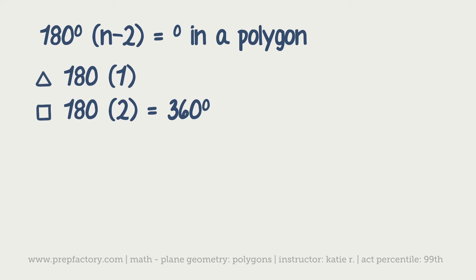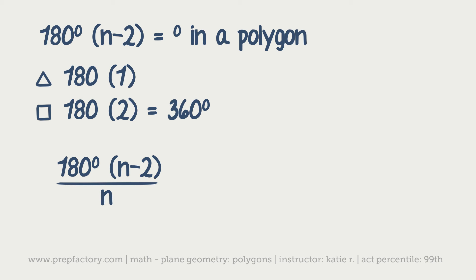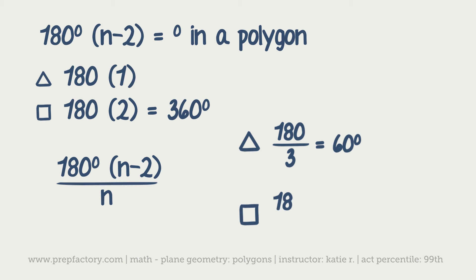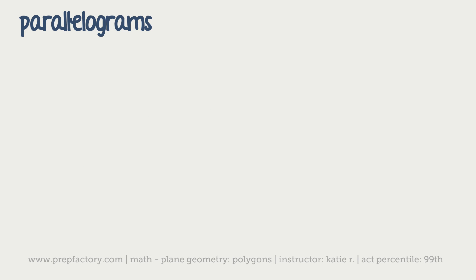If you're trying to find the number of degrees in any given angle in a regular polygon — regular meaning all angles and all sides are the same — then take the same formula and divide by n. For a triangle: 180 divided by 3 gives 60 degrees, which works for an equilateral triangle. For a square: 180 times 2 divided by 4 gives 90 degrees, which is correct for a square.